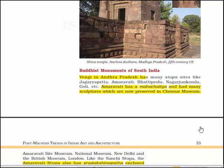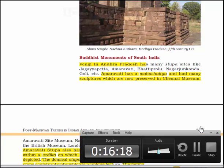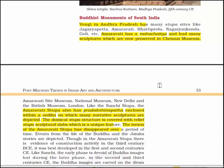Next, we are going to read about the Buddhist monuments of South India. Vengi in Andhra Pradesh has many super sites like Jagayapeta, Amaravati, Bhattiprolu, Nagarjunakonda, Goli, etc. Amaravati has a Mahachaitya and had many sculptures which are now preserved in Chennai Museum, Amaravati Site Museum, National Museum New Delhi and the British Museum.